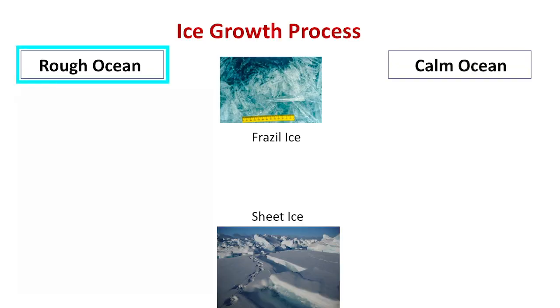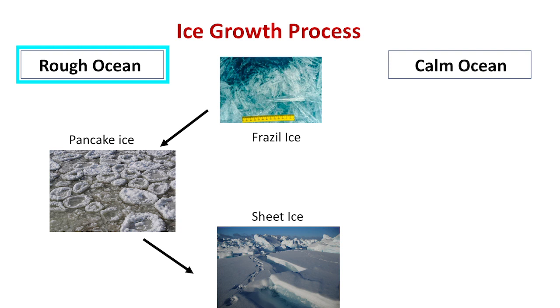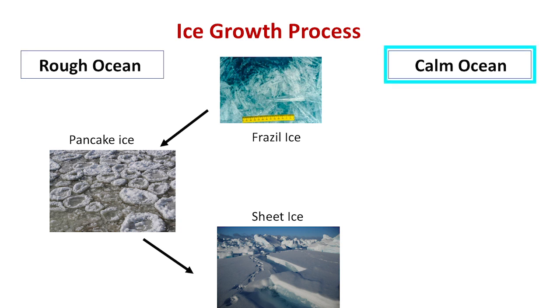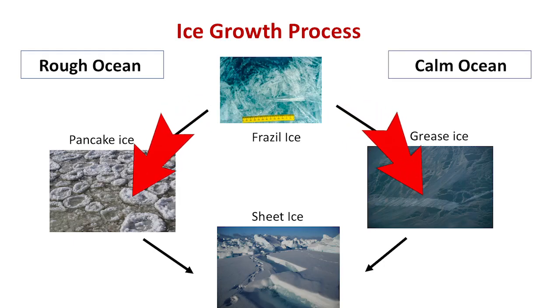As frazil ice crystals continue to grow and bond to one another, there are one of two pathways that sea ice formation can take in forming a thick consolidated ice cover, and these two pathways depend on the weather. In windy conditions and rough seas, frazil ice crystals start lumping together into masses and colliding, forming circular disk shapes that very much resemble pancakes — scientists call this pancake ice. In the opposite scenario, when there's no wind and conditions are very calm, frazil ice crystals grow and bond together to form a uniform, very thin sheet that looks like an oil slick on top of the water — scientists call this grease ice. In both cases, as the ice continues to grow, thicken, and consolidate, it will form a thick sea ice cover.